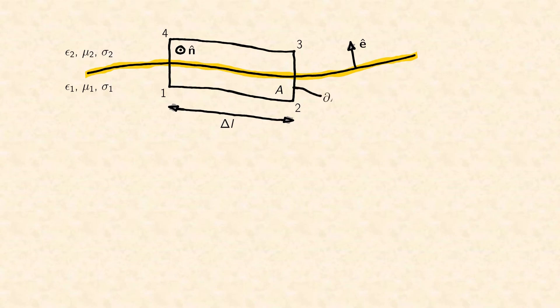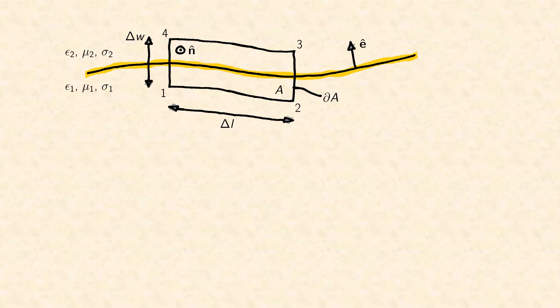Area A is perpendicular to the interface plane. This means that its normal vector N is perpendicular to the interface normal E along the intersection line of A and the interface. A is parallel to the interface between the corner points 1 and 2 as well as between 3 and 4, and it is perpendicular to the interface between the corner points 2 and 3 as well as 4 and 1. Area A is a waved rectangle with length delta L and width delta W. The choice of the upward direction of the normal vector N was arbitrary. However, this choice fixed the direction of the perimeter path to be counter-clockwise, due to the right-hand convention in mathematics.